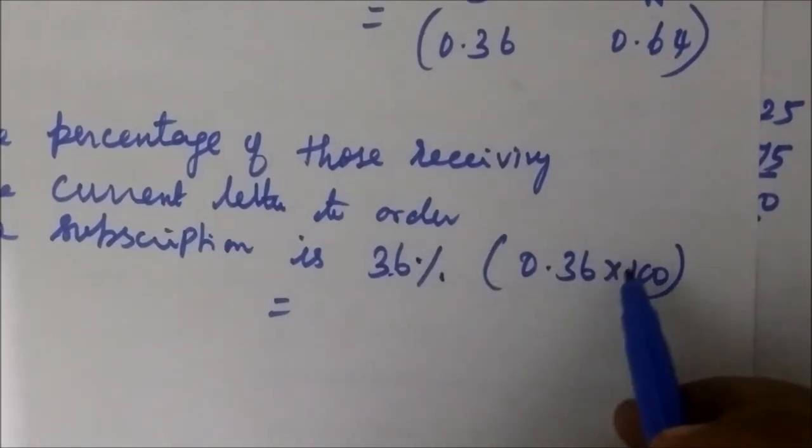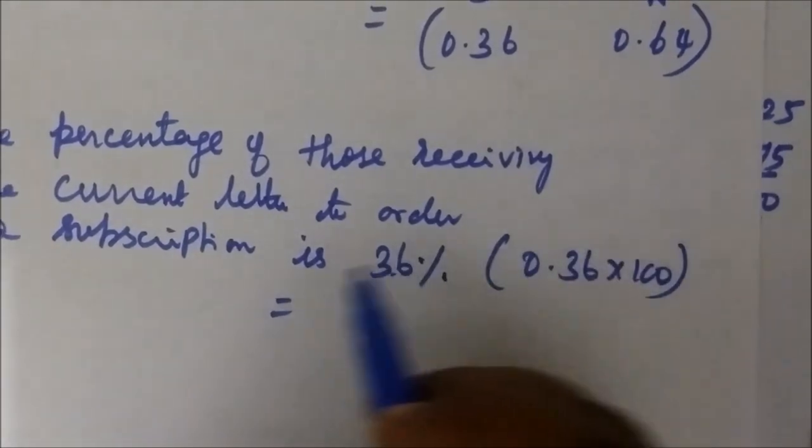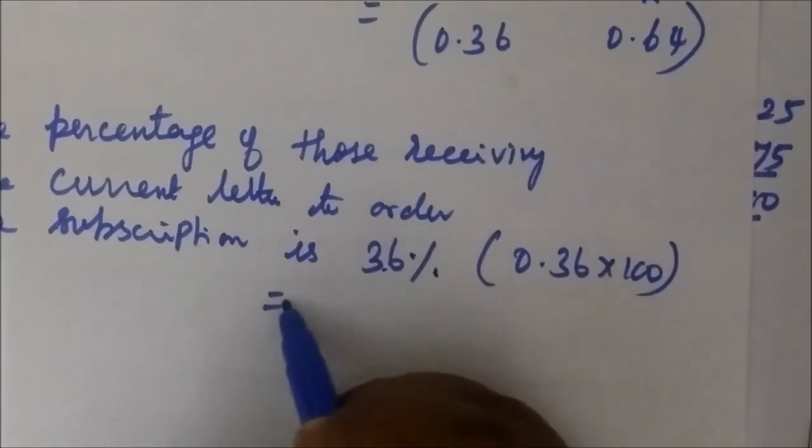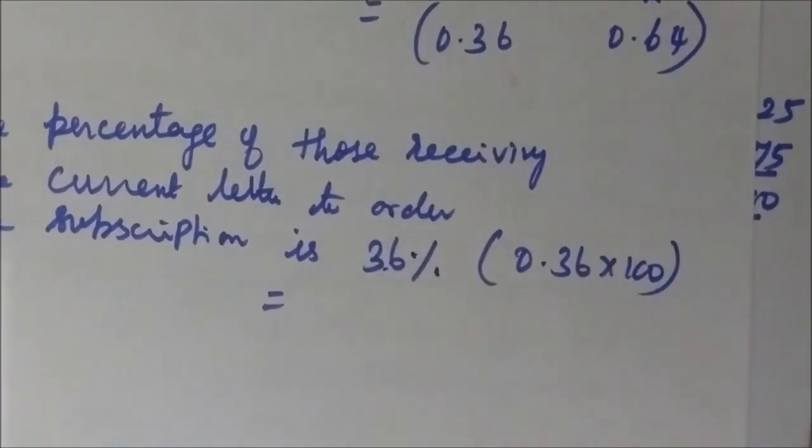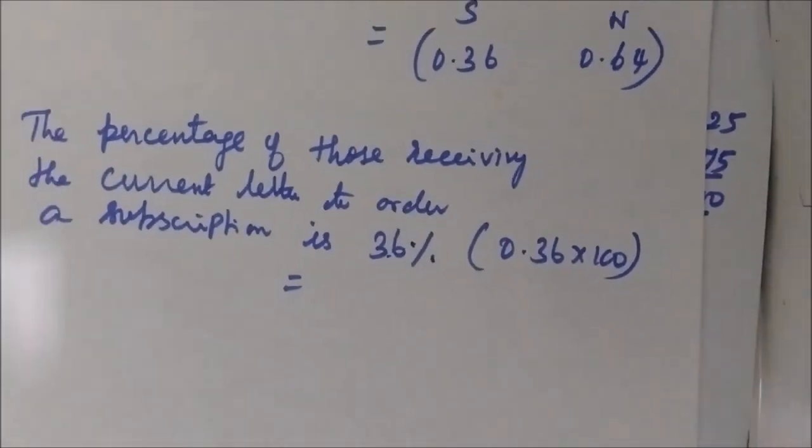The decimal value multiplied by 100 gives the input. We write the answer for this. Thank you.